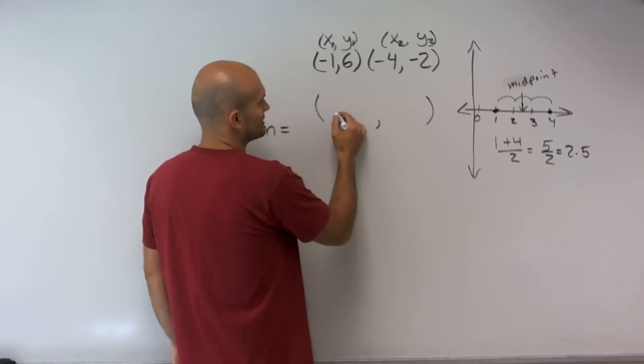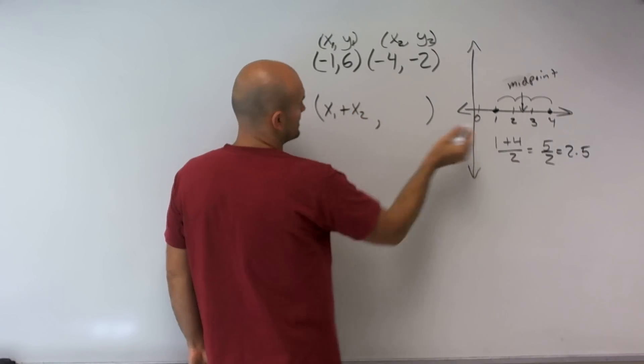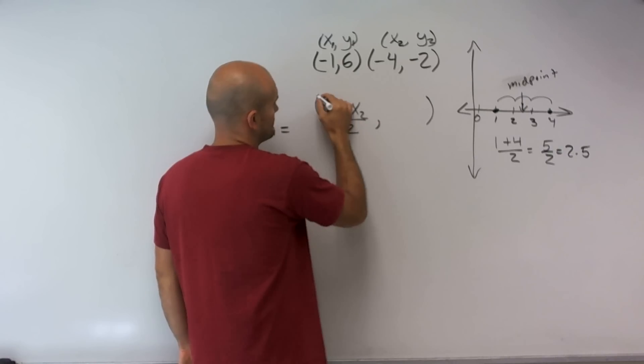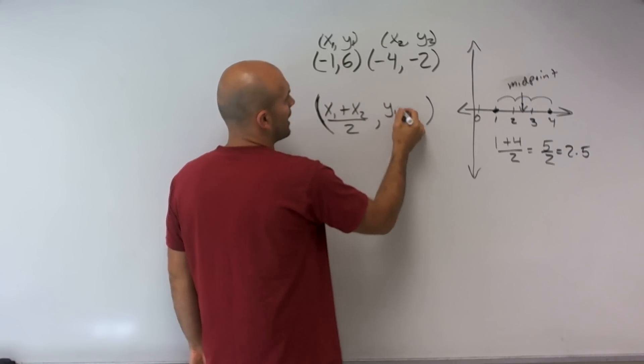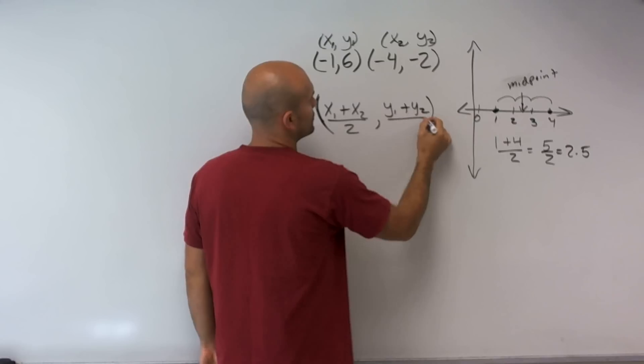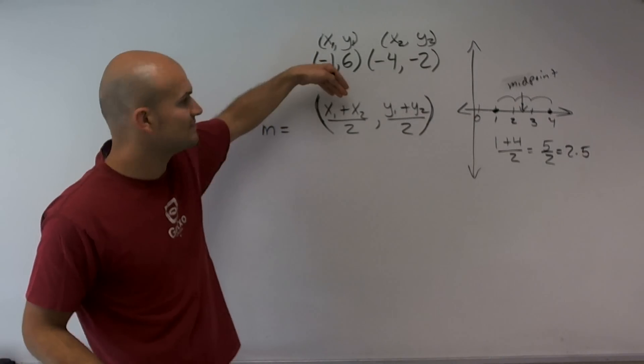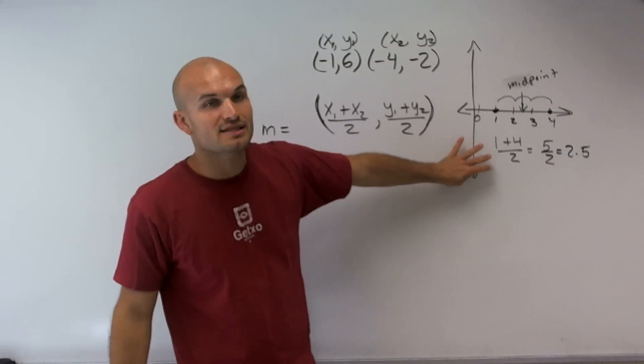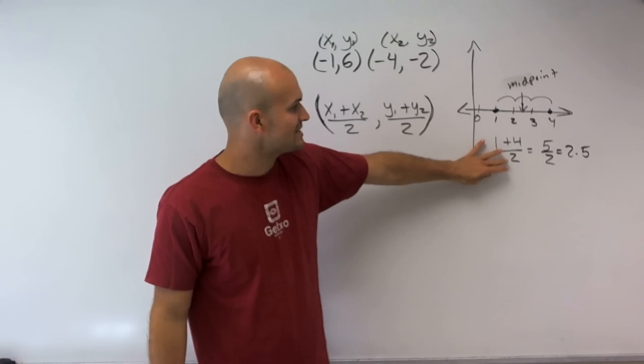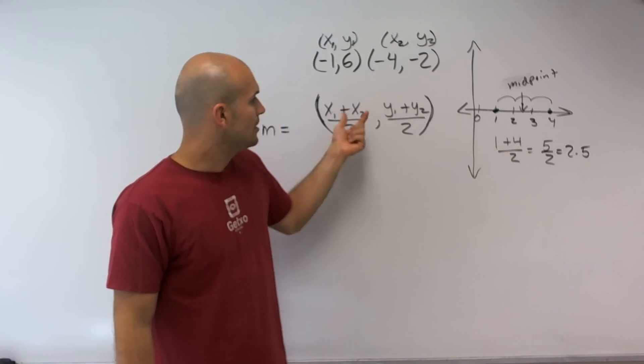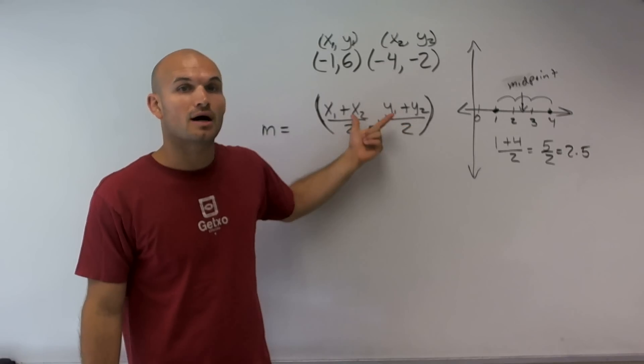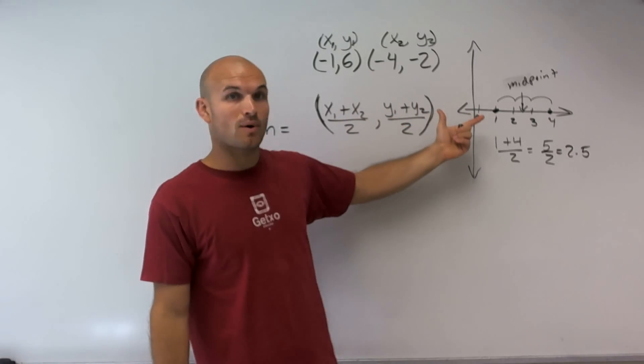And it looks something like this: x1 plus x2, just like I did here, divide by 2, comma, y1 plus y2 divide by 2. So therefore, you can see what I've done now is I pretty much did this for a linear, but I pretty much did the exact same thing here, but now I did it for both values, the x coordinates and the y coordinates.